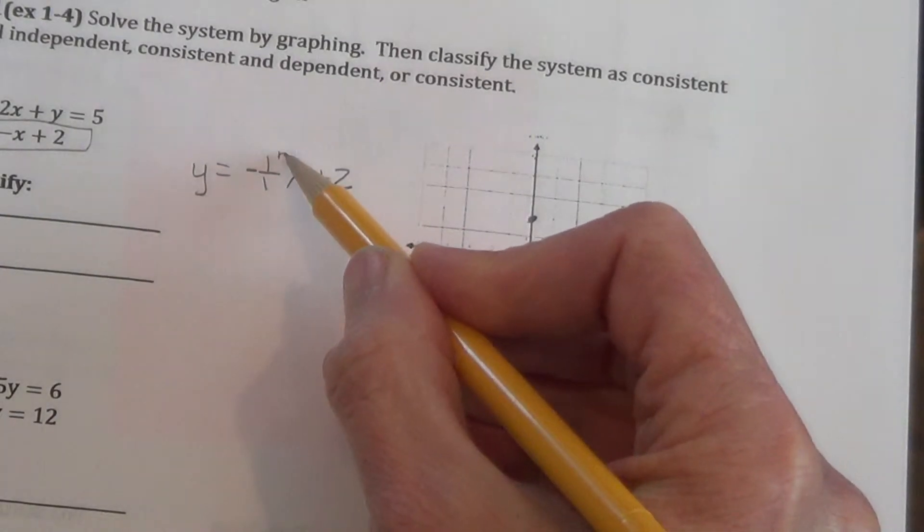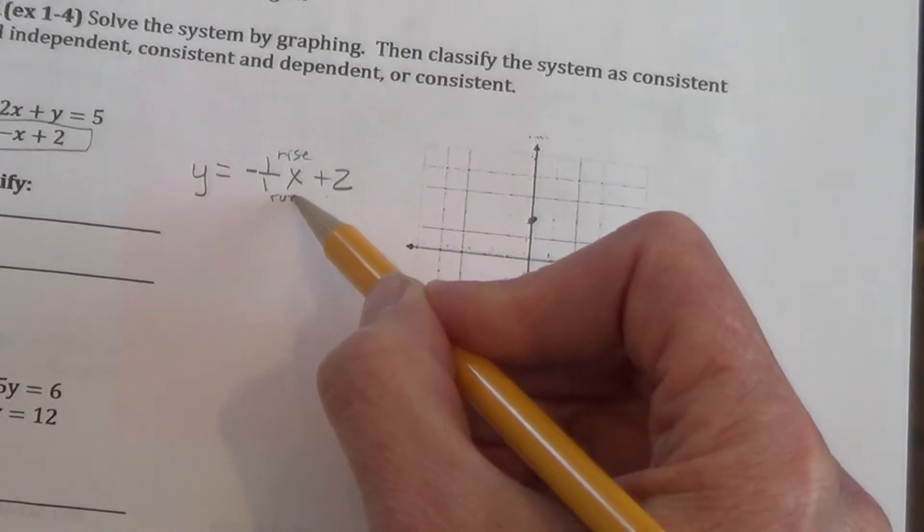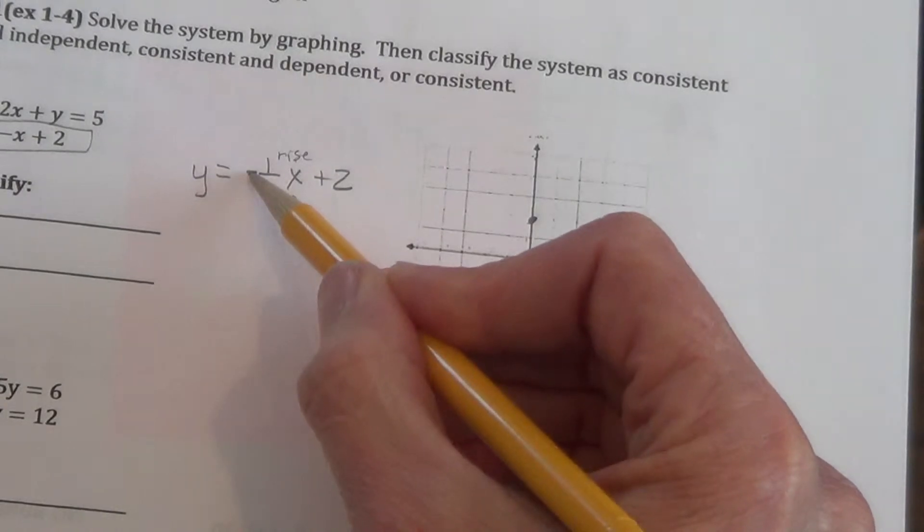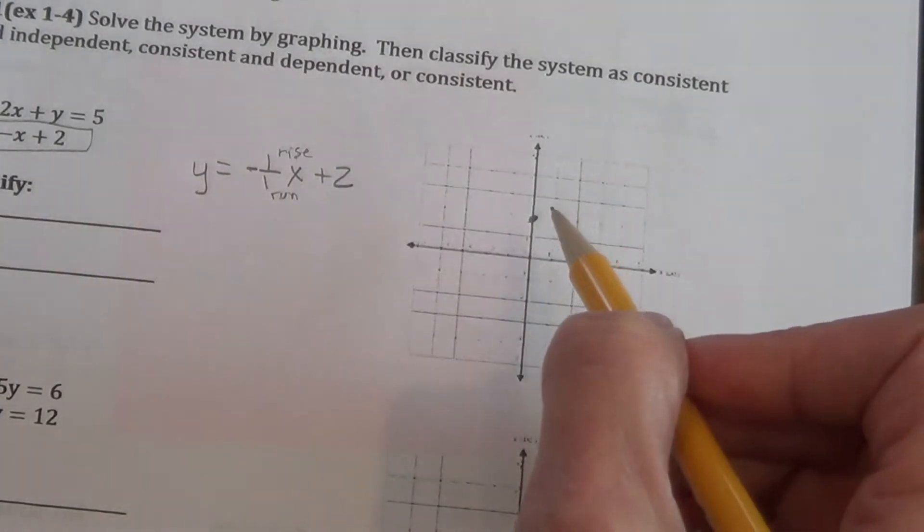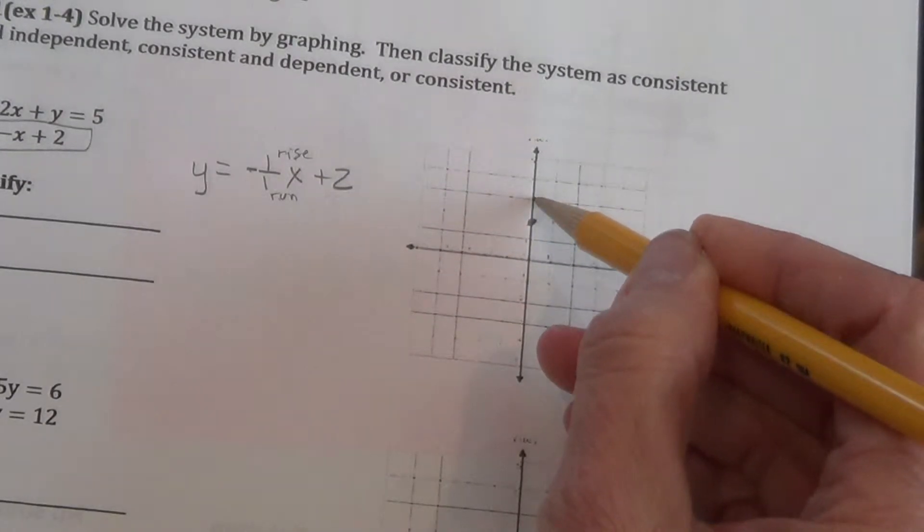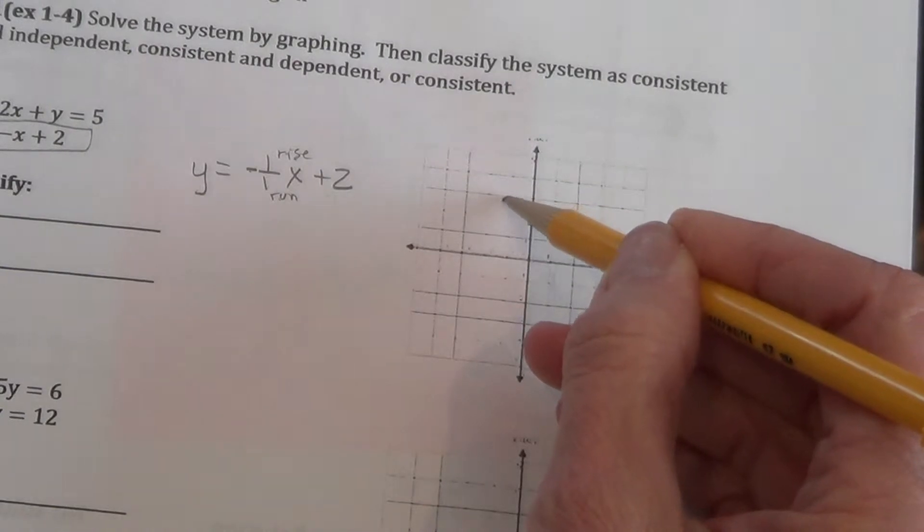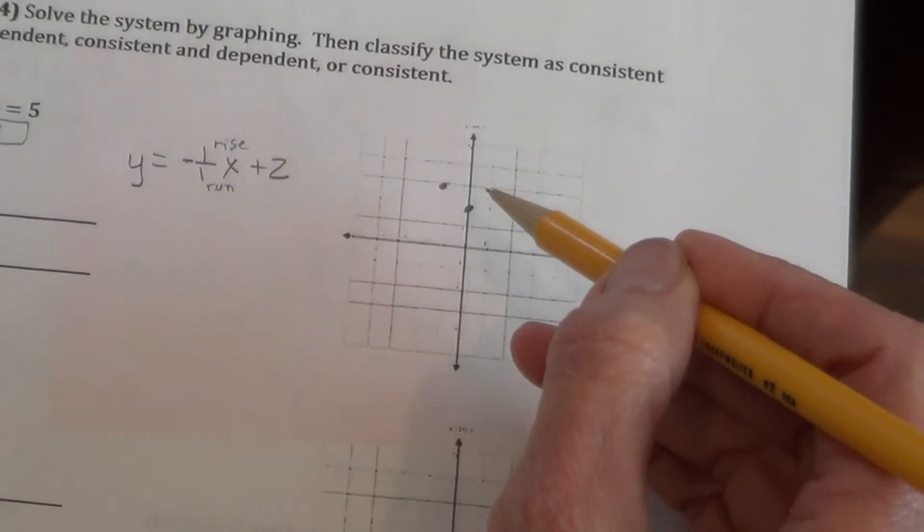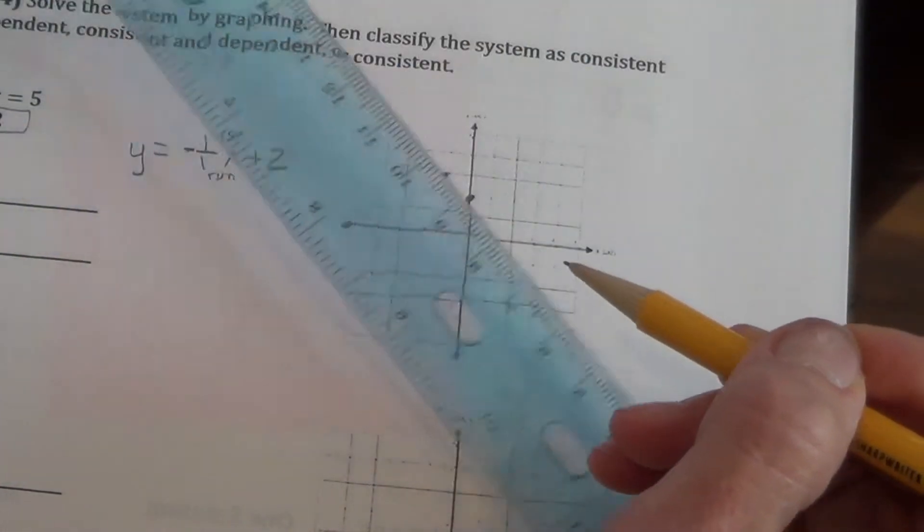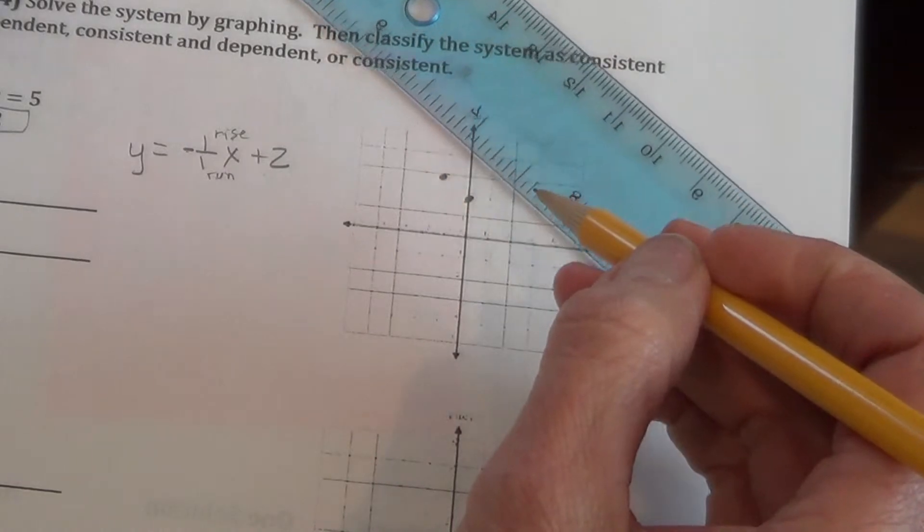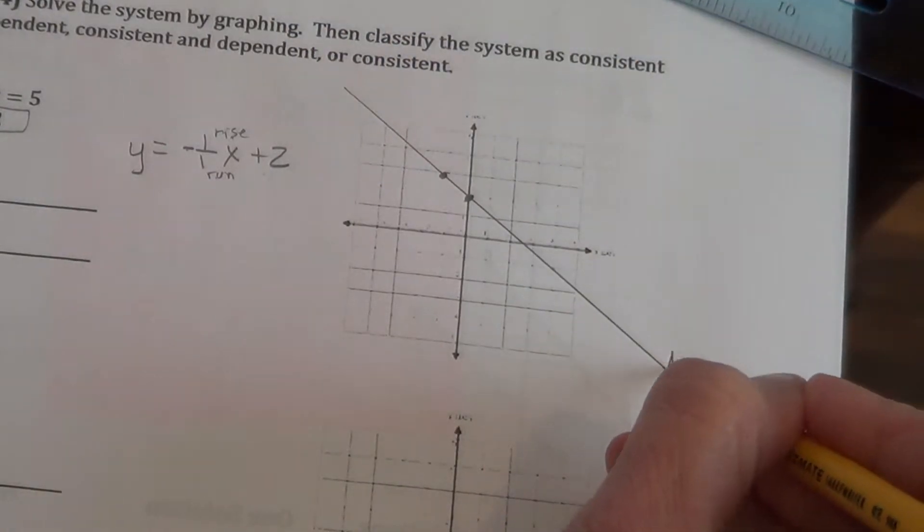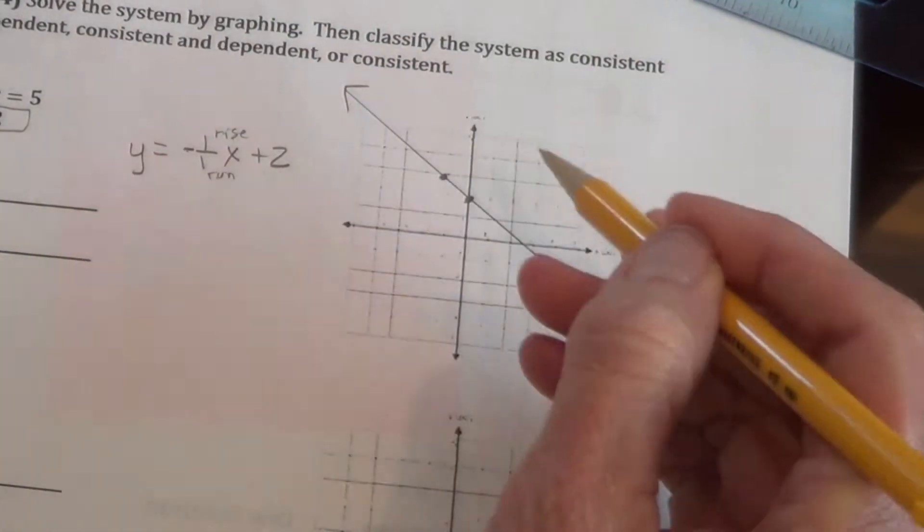Our slope is rise 1, run 1. Notice I did not say fall. We always rise and run. If it's negative, we run to the left. If it's positive, we run to the right. So, from that y-intercept, we rise 1, and because it's negative, we run 1 to the left. Now, we grab the ruler. Never, ever graph without a ruler in my room, please. And we attach those two points. Draw a line clear through the entire graph.